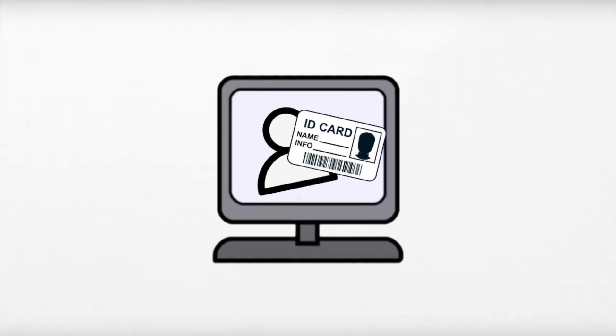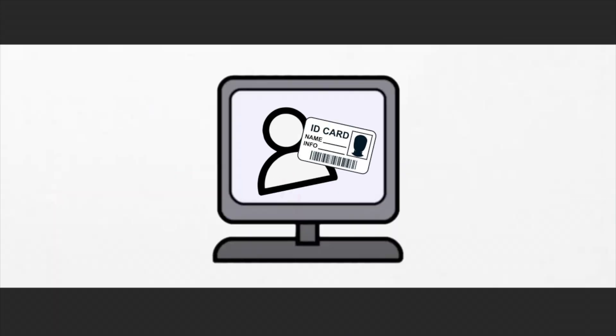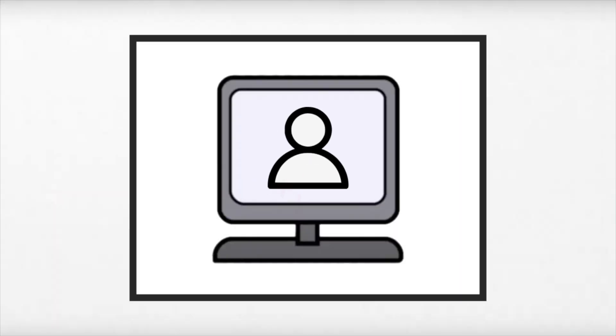Integrity Advocate begins with an authentication process that involves taking a photo of the user who will write the exam and their government-issued photo ID. The software takes a recording of the user while the exam is written. An artificial intelligence then compares this recording to a series of established rules for exams.